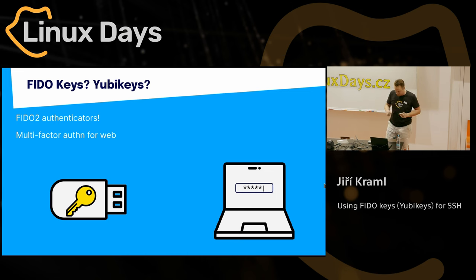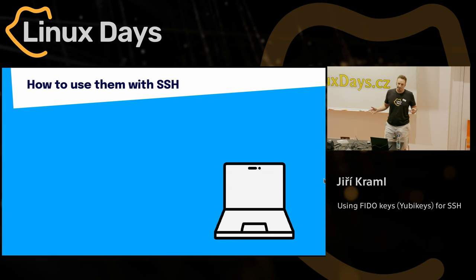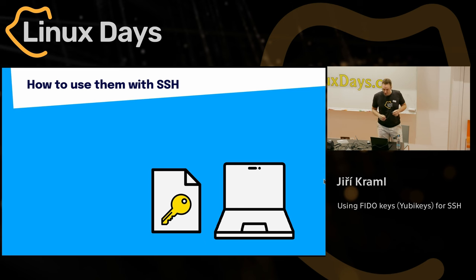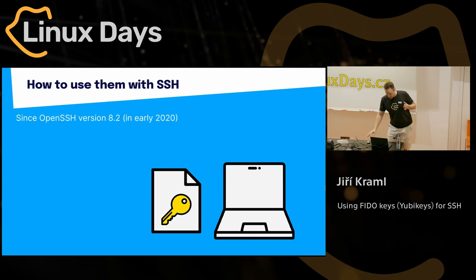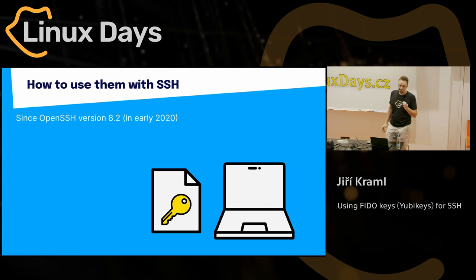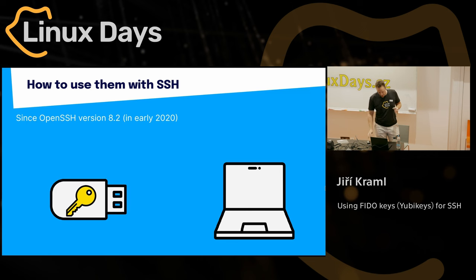That sounds quite useful to get multi-factor authentication. Can we use that with SSH? Yes, of course — that's why we are having this talk today. SSH already employs something very similar: when you use SSH key files, you also use public and private key cryptography. And it would be very nice if we could use an authenticator instead of that key file. That's been possible since early 2020, just before the coronavirus hit — they merged that feature in OpenSSH version 8.2. We can now use the keys from this authenticator.